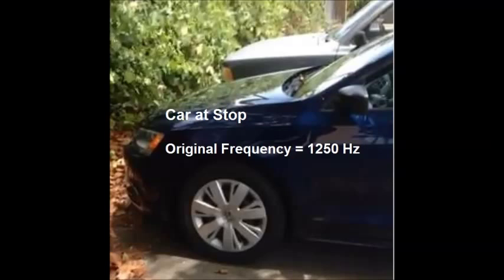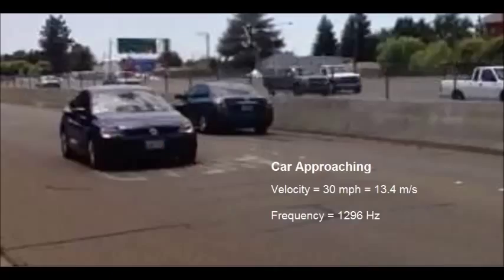When the car wasn't moving, we measured the frequency to be 1250 hertz. When the car was approaching, it had a velocity of 13.4 meters per second, and the recorded frequency by our microphone was 1296 hertz. When the car was going away from the camera, the car had a velocity of negative 13.4 meters per second, and our microphone recorded 1206 hertz.